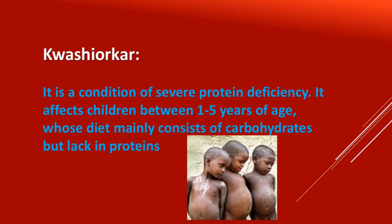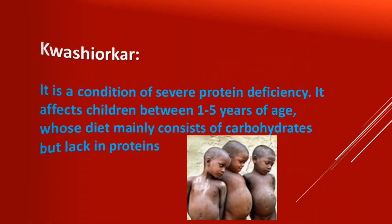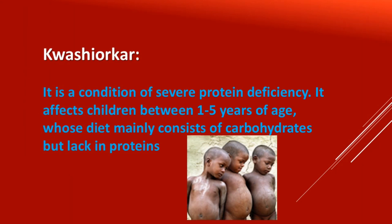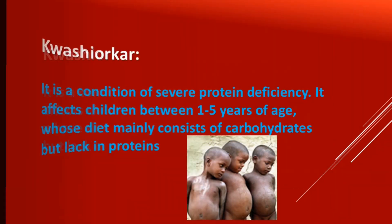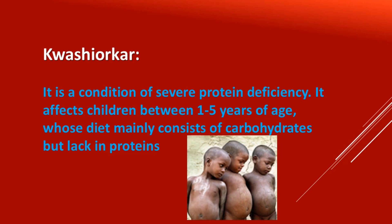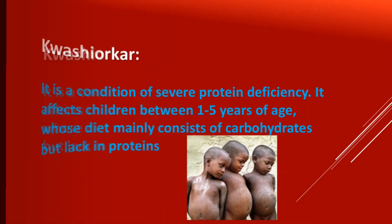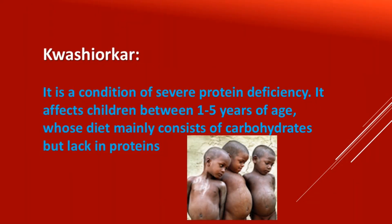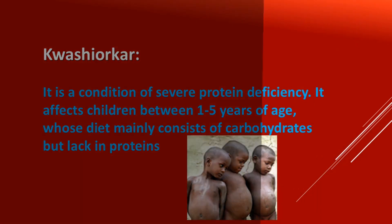Look at this picture. This shows a condition of severe protein deficiency disorder called Kwashiorkor. It is a condition of severe protein deficiency that affects children between one to five years of age whose diet mainly consists of carbohydrates only, lacking proteins. They need adequate proteins in their diet.